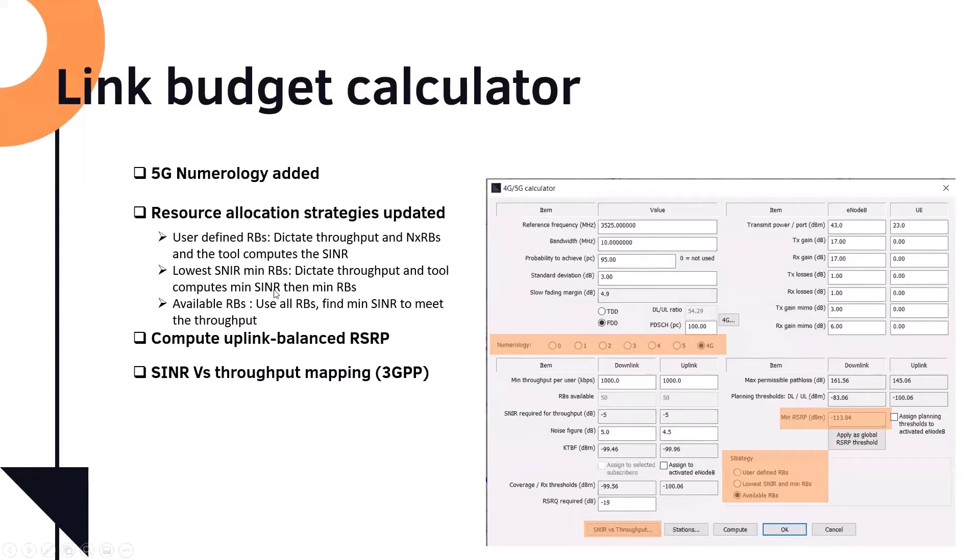First, we dictate the throughput, and the tool computes minimum SNR, then the minimum RBs. So first we establish what is the minimum SNR we need, and then we establish how many RBs we can fulfill this. The last one, we use the entire RBs to do the dimensioning.